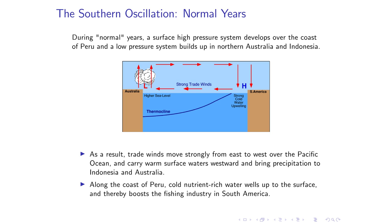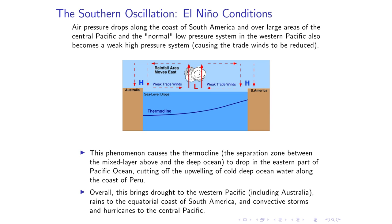In a normal, non-El Niño year, the Asia-Pacific gets a good amount of rain, and on the Latin American side — the Peru side — we have cold water, with the thermocline up, giving us cold, nutrient-rich water that's good for fisheries. But this picture changes quite drastically in an El Niño year. The low pressure in Asia-Pacific and high pressure in Latin America both weaken, so you get weak high pressure in both regions.